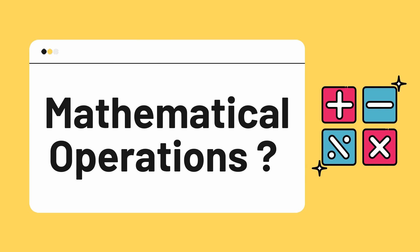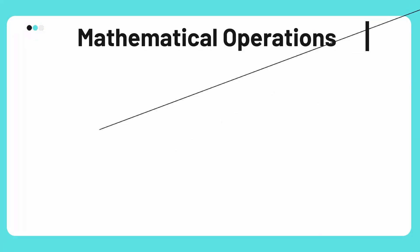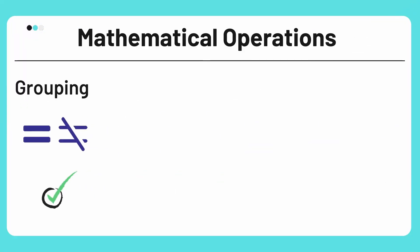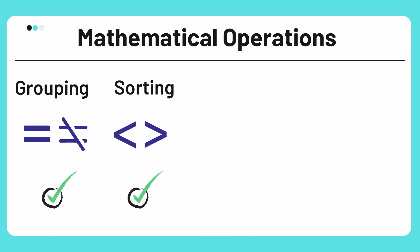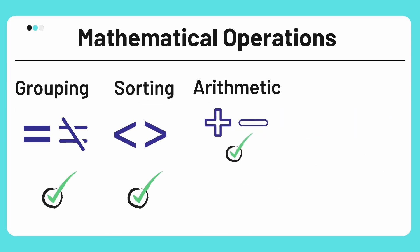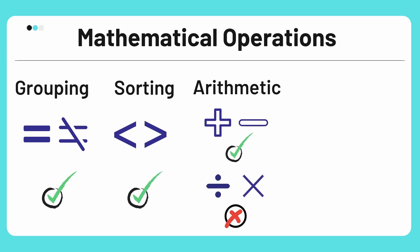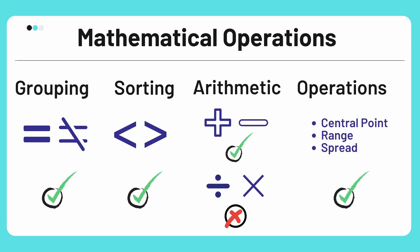Let us now see what mathematical operations can be performed on interval data. We can easily group the data using equal to and not equal to operators. Sorting is also possible. Addition and subtraction can also be done — for example, we can say that 2 PM is one hour later than 1 PM. However, we cannot multiply or divide interval data as there is no meaningful zero — that is, we can't say that 6 PM is twice as late as 3 PM. Apart from these, we can also calculate the central point, which can be mean, median, or mode, as well as range and the spread of data, which can be standard deviation or variance.